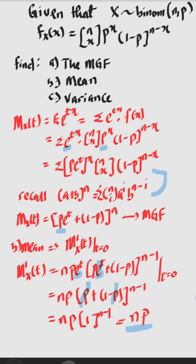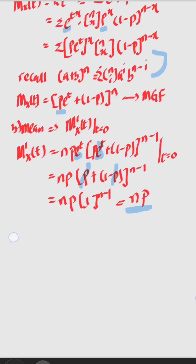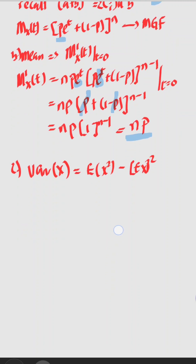This is the mean of the binomial distribution. Now let's proceed by calculating the variance. The variance of the distribution is E(X²) minus [E(X)]². To calculate E(X²), this is going to be the second derivative of the MGF — that is your second moment. To find it, differentiate M'_X(t) a second time using the product rule.